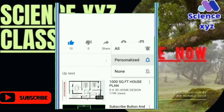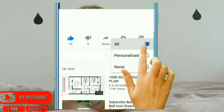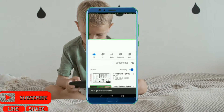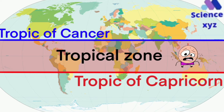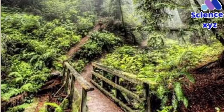Don't forget to hit the bell icon so that you are notified of our latest video updates. The term Tropical Region means a place near the equator, which includes India, Malaysia, Kenya, Republic of Congo, Brazil, Nigeria, and Uganda.